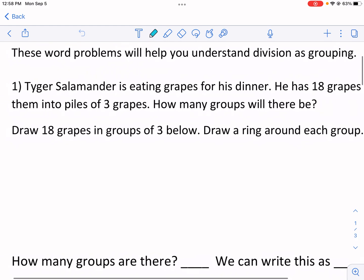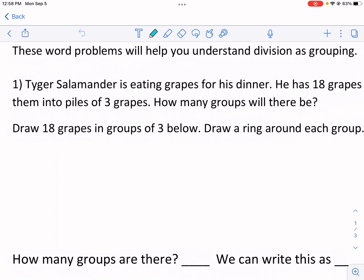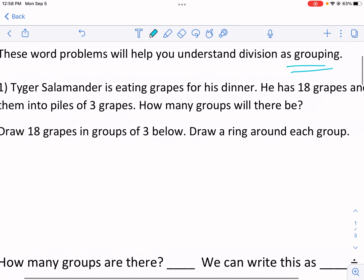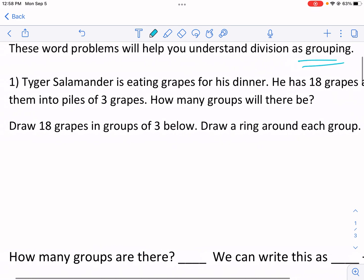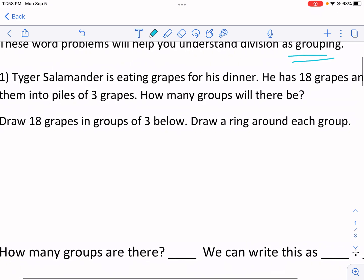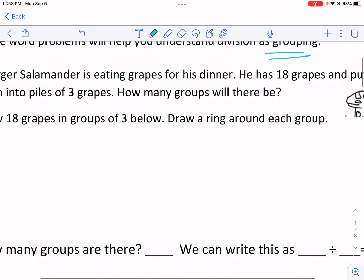These word problems will help you understand division as grouping. That's the key word there, as grouping, so putting into equal groups. Tiger salamander is eating grapes for his dinner. He has 18 grapes and puts them into piles of three grapes. How many groups will there be?